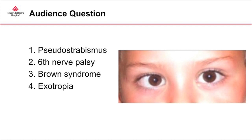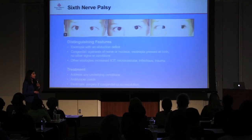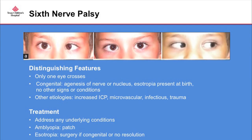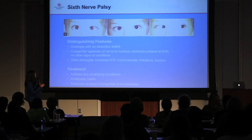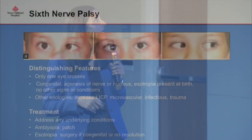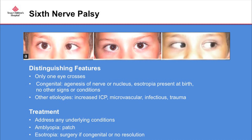This patient has a sixth nerve palsy. At first glance the eyes may look aligned, but there's a mild esotropia with some temporal displacement of the light reflex. If you cover the left eye, you would see a shift of the right eye outward. The real clue is that when you have the patient look to the sides, there is a significant abduction deficit. The distinguishing feature of sixth nerve palsy is esotropia with an abduction deficit. It can be congenital, due to agenesis of the nerve or nucleus, with esotropia present at birth and no other signs. Other etiologies include increased intracranial pressure, microvascular causes, infections, and trauma.